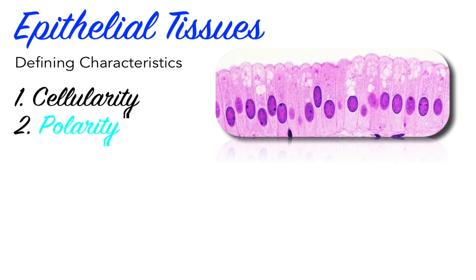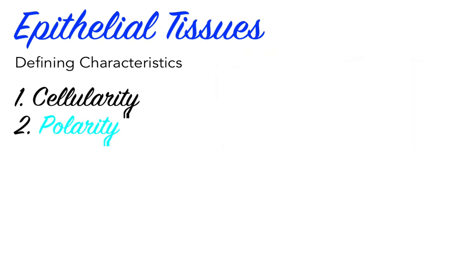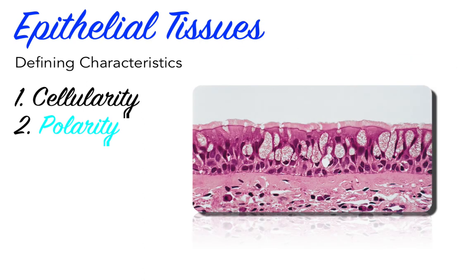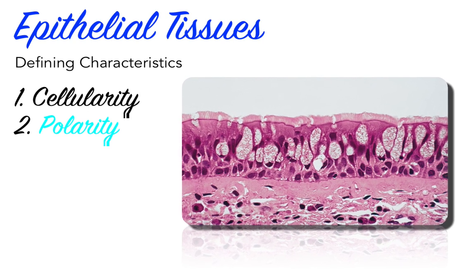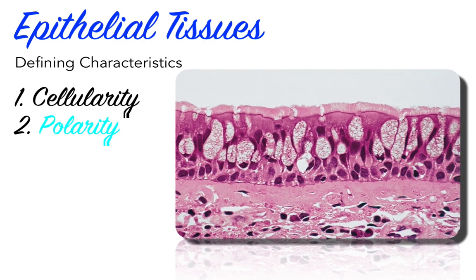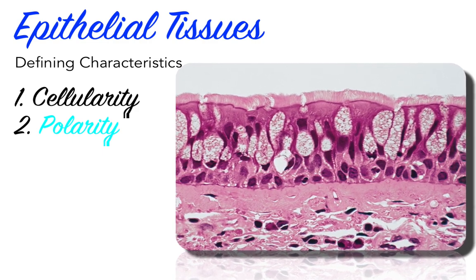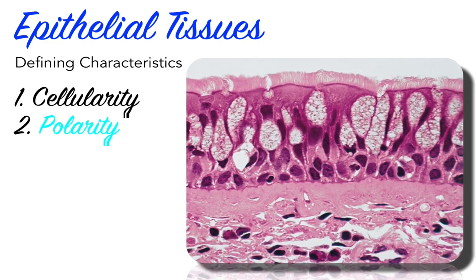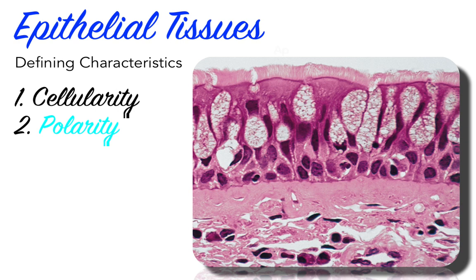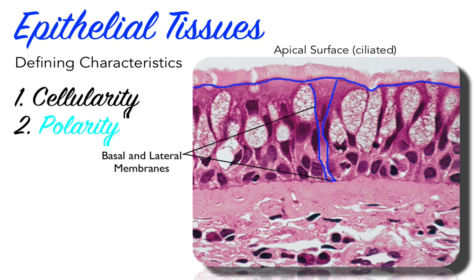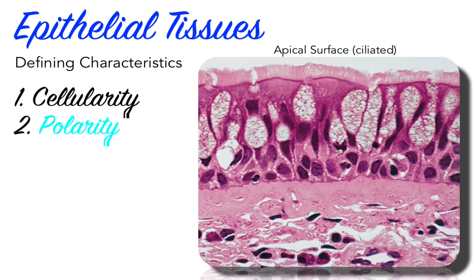Second, epithelial tissues display polarity. Polarity means that the cells are rarely symmetrical, either in shape or in their surface components and therefore their functions. Their cells often have distinct ends or poles, hence the word polarity. Whether the epithelial tissue is one cell layer thick or multiple layers thick, there is at least one surface exposed to the external environment or lining the inner hollow chambers of an organ. This free surface is referred to as the apical surface, because it's at the apex of the cell.